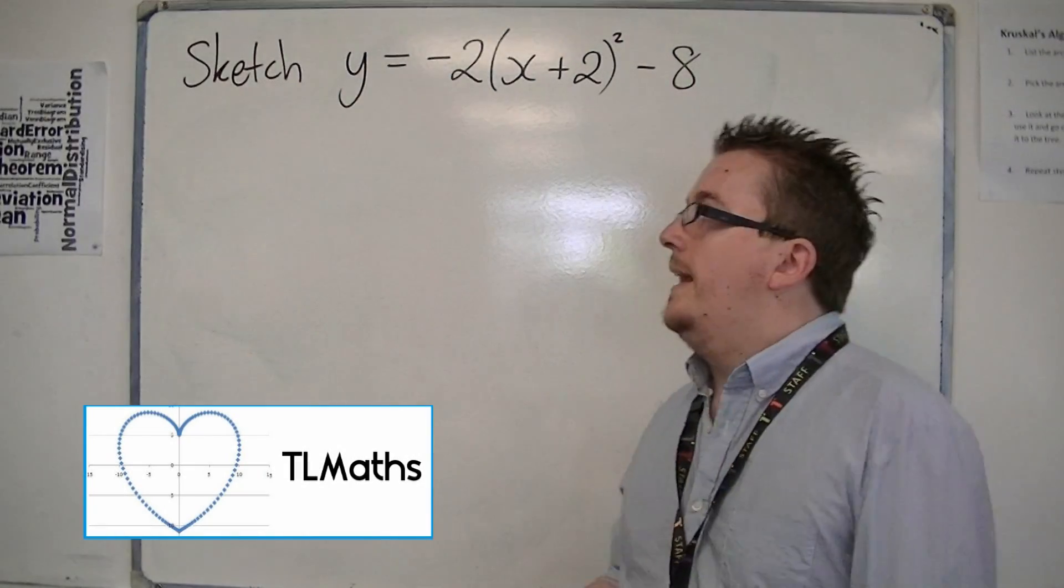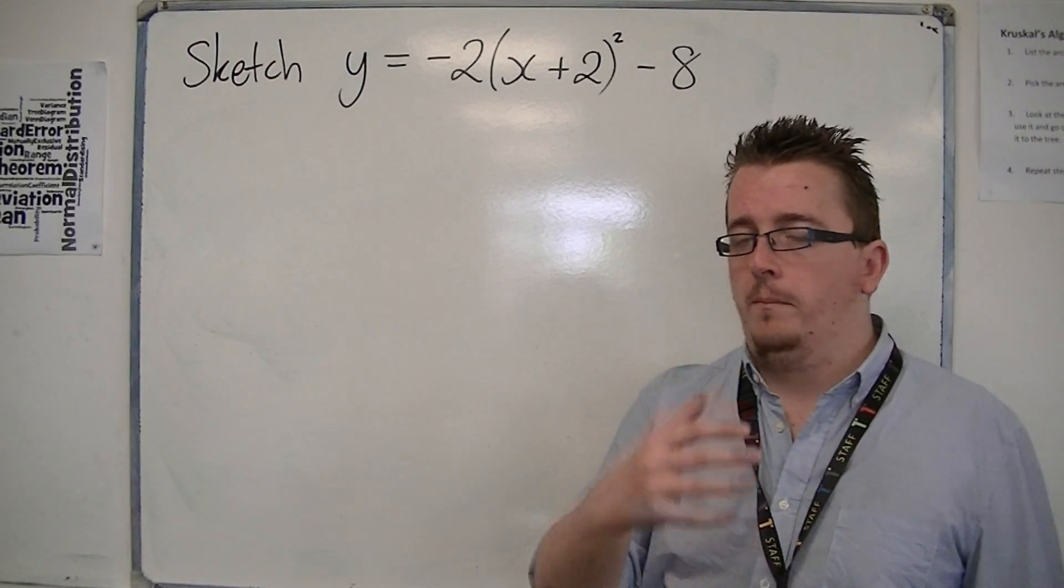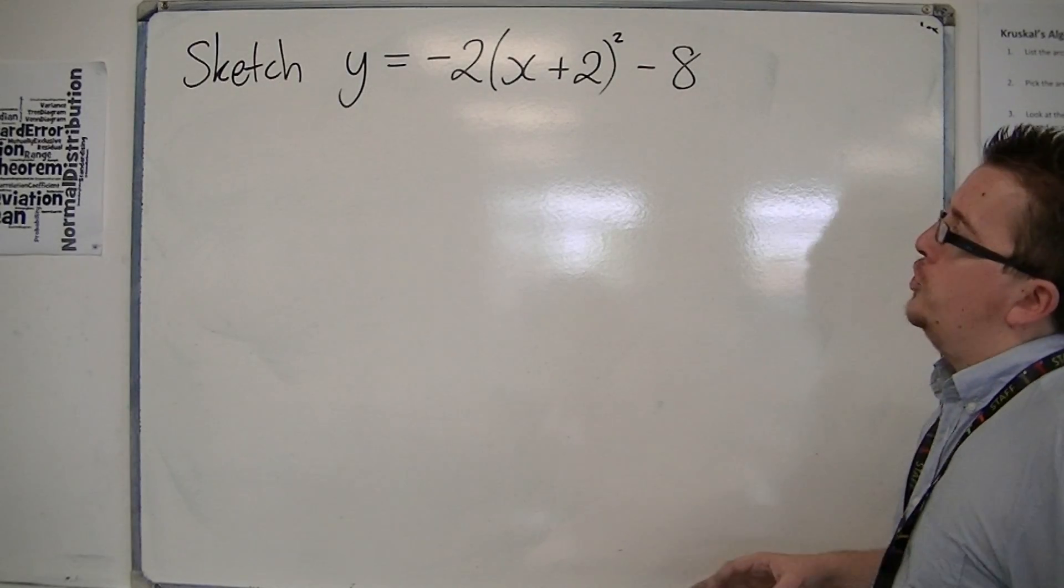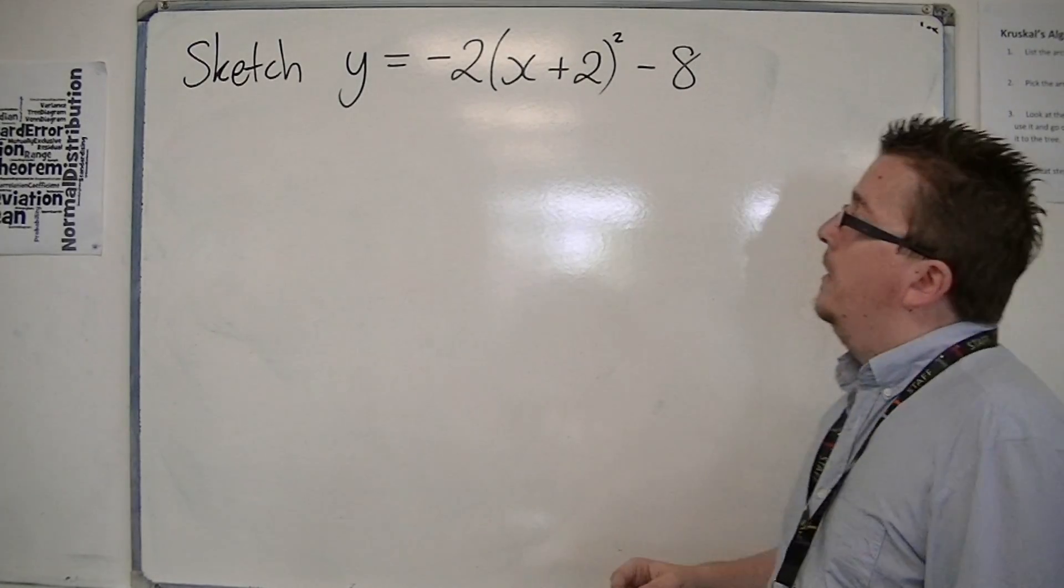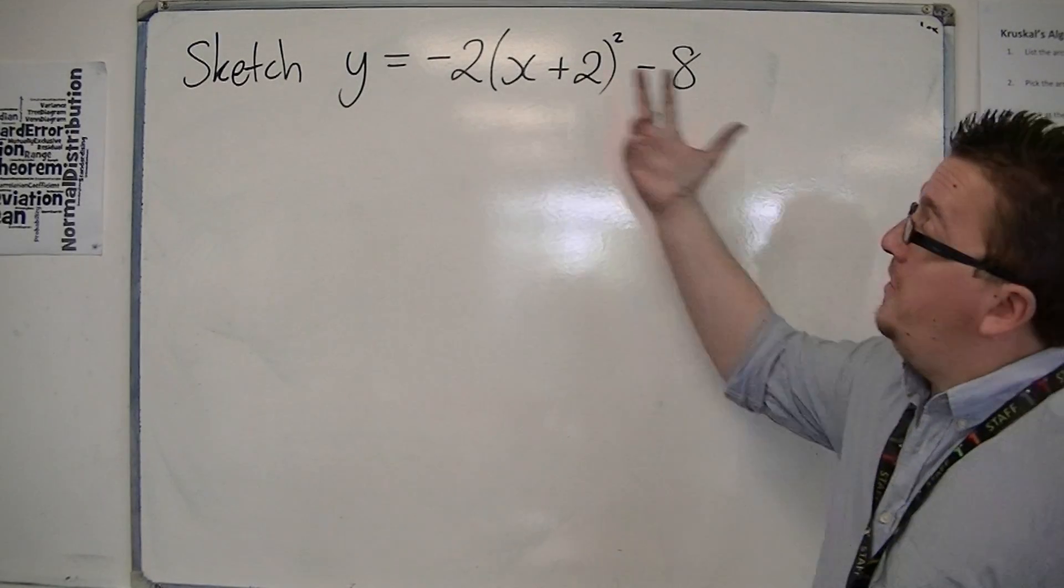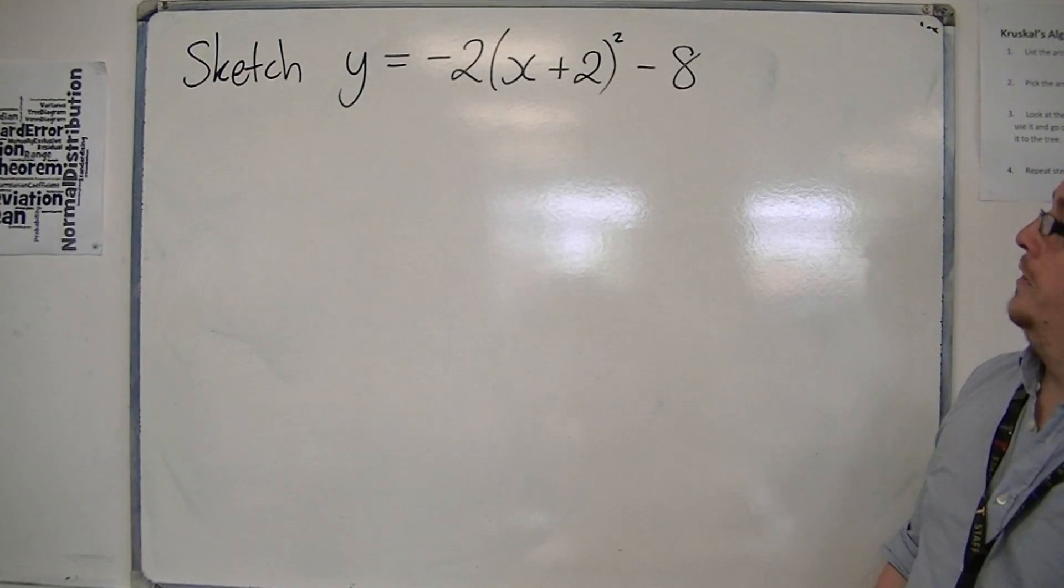In this video, we're going to be looking at a slightly trickier problem than before. We're still sketching a curve that's in completed square form. We've got this minus 2 on the outside, which is going to give us a little bit more cause for thought.